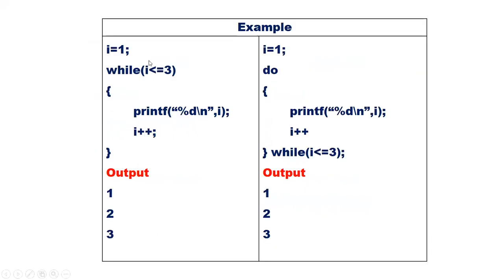Consider this example. The variable i is initialized to 1. While i is less than or equal to 3, print the value of i. Initially the condition is true, so we go to the body and print i — 1 will be printed. Then i++ means the value of i is incremented by 1, so i now becomes 2, and we go back to check the condition.